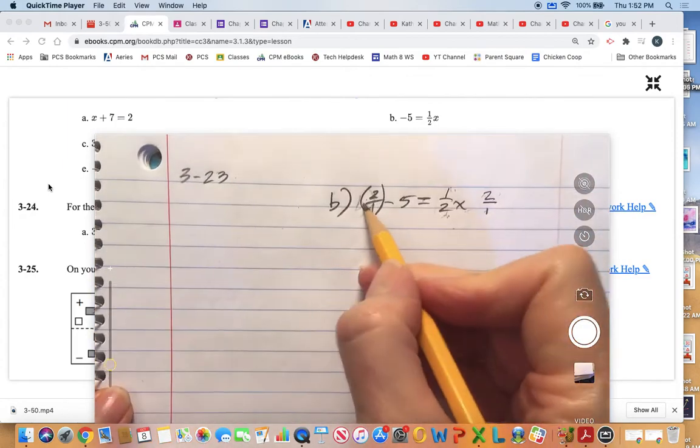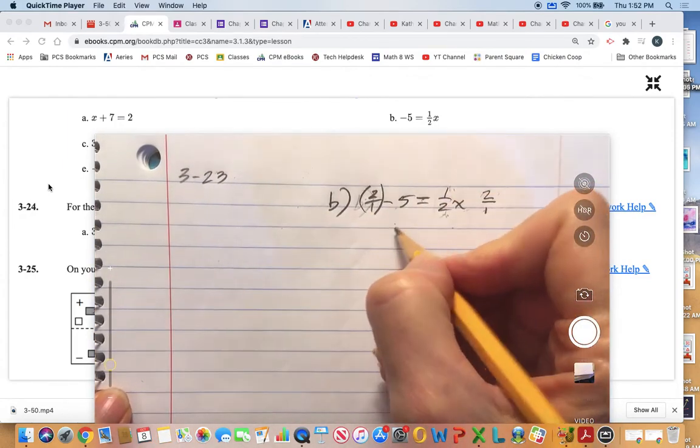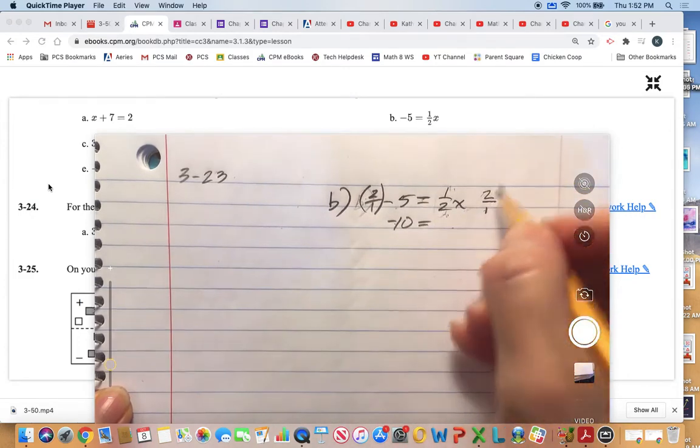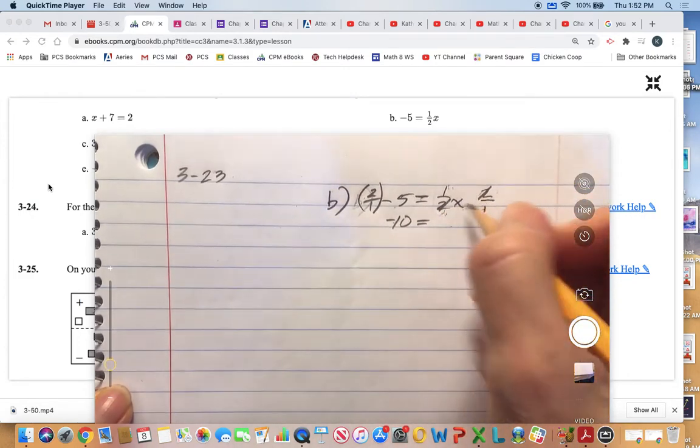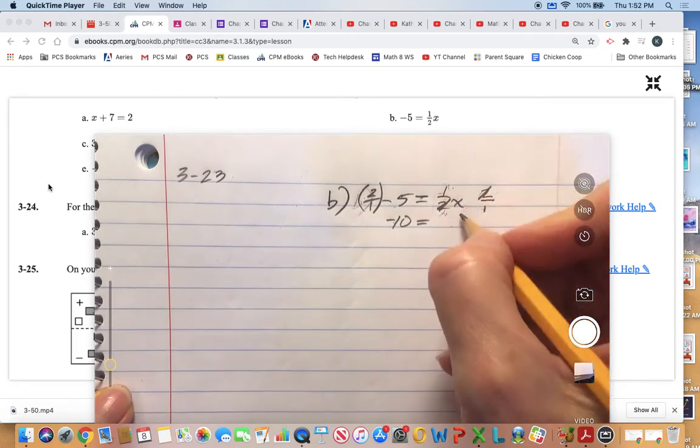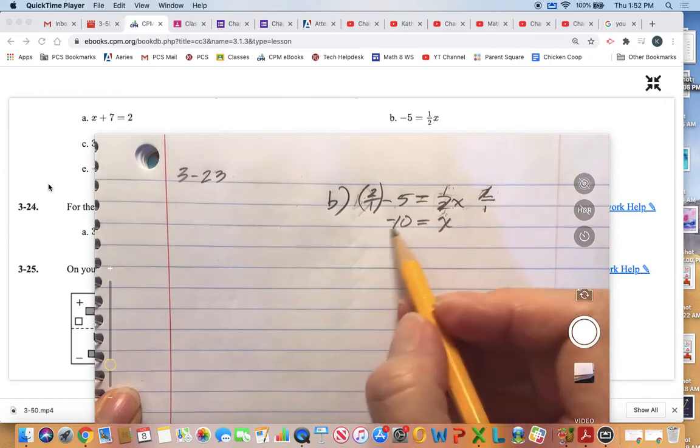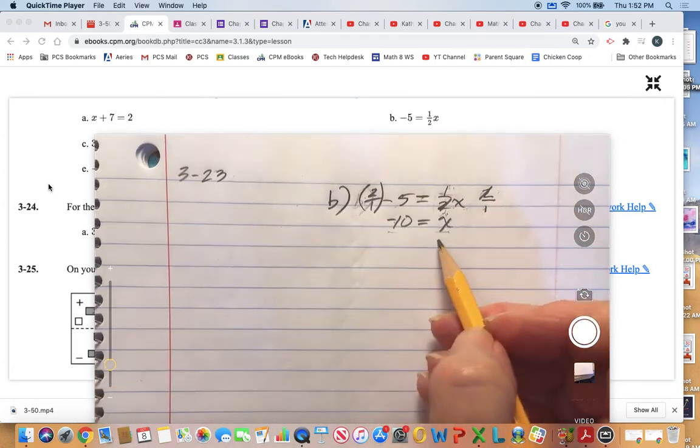2 times negative 5 is negative 10. On this side, we're canceling out the 2, so this is just x times 1, or just plain x. Therefore, x equals negative 10.